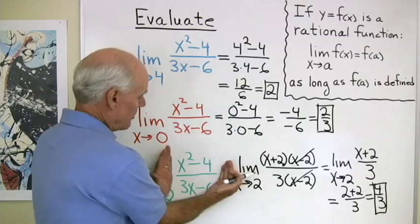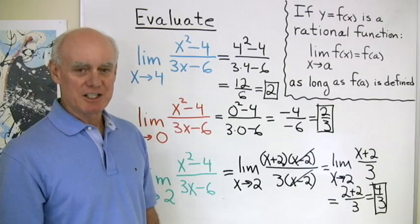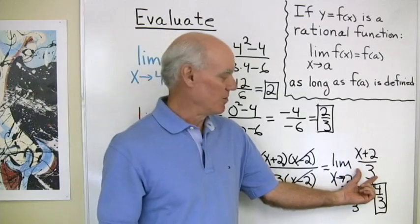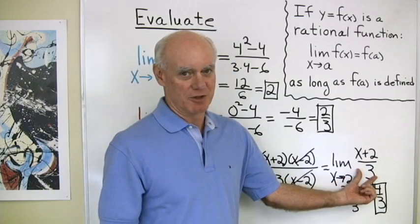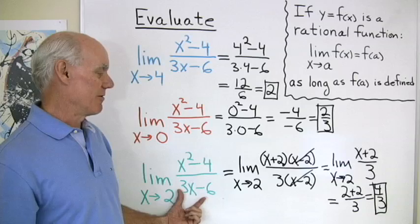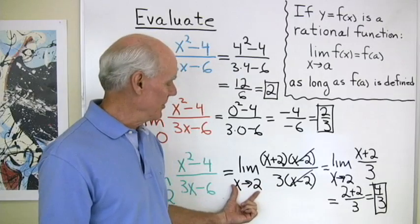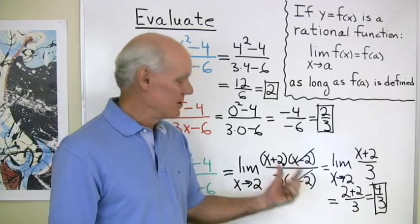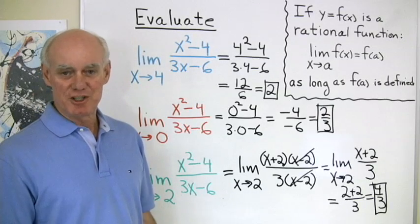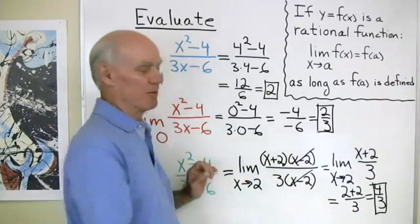So (x² - 4)/(3x - 6) and (x + 2)/3 are the same everywhere except when x = 2. The original expression is undefined at x = 2, while the simplified one equals 4/3 there. Because the limit as x goes to 2 means x never equals 2, we can do this simplification. We've seen two approaches: using a spreadsheet for intuition, then doing the algebra to confirm the same result of 4/3.